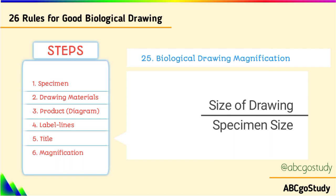Number twenty-five, biological drawing magnification: ensure you put the magnification at the bottom right-hand corner. The formula for magnification is size of the drawing over size of the specimen. Put the size of the drawing from your drawing sheet, and the size of the specimen you were given. If your diagram is about twice the size of the specimen, the magnification is times two.